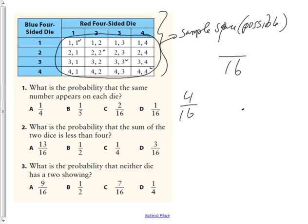So 4 out of 16 have the same number. So you're like, oh, that's the answer. And then you look at A, B, C, and D, none of them is 4 out of 16. That's because you can reduce that to lower terms. So in lowest terms, it's 1 chance out of 4, which is A.